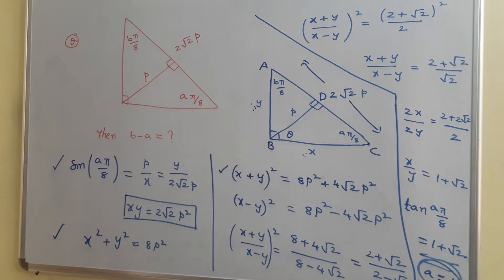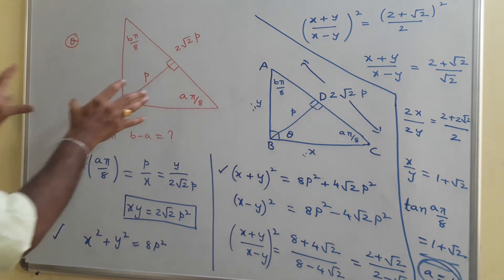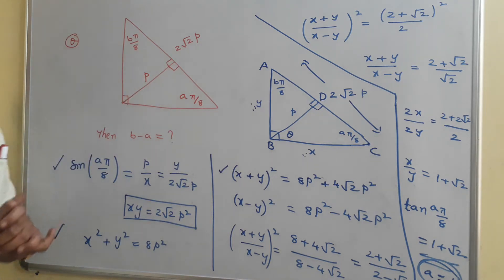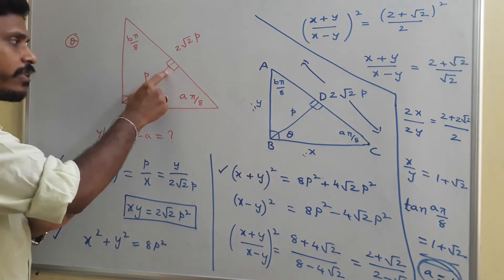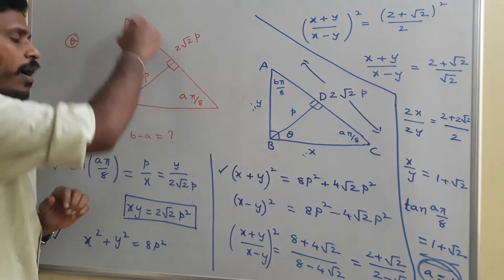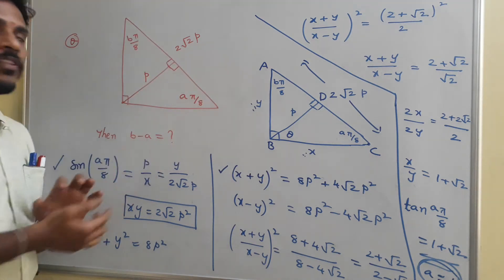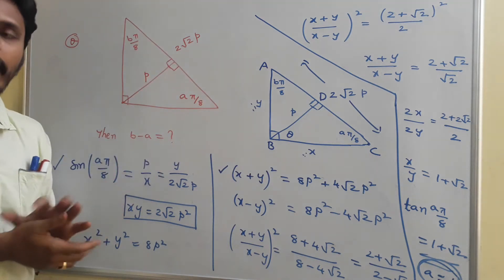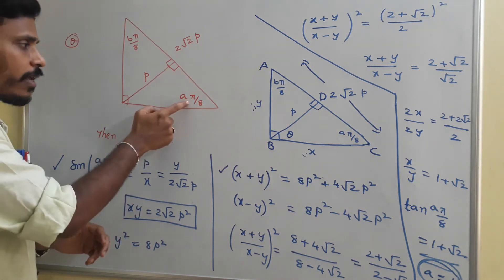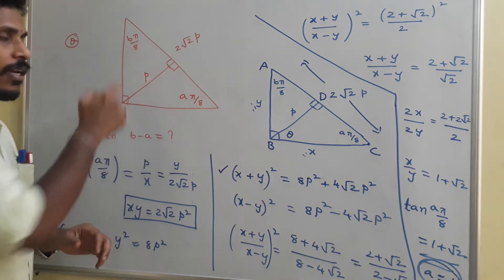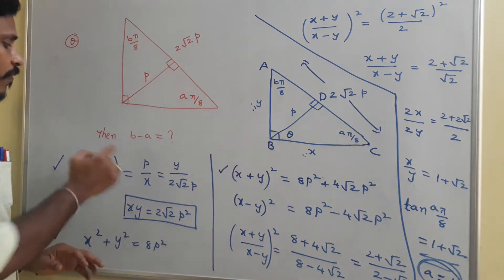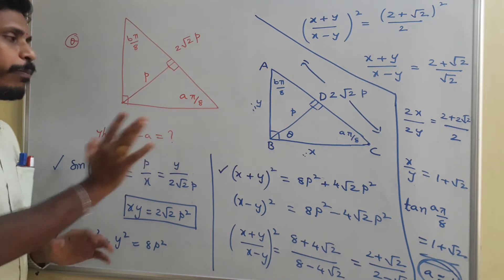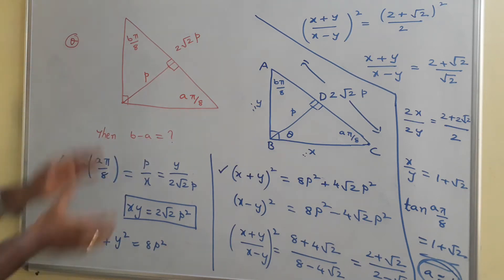Let's look at the problem once again. This green color path is completely in question. We have a right angle triangle. In the right angle triangle, this length is b and the hypotenuse length is 2√2·p as given. One angle is a·π/8 and the other angle is b·π/8, also given. They ask us to find b minus a — that's a separate path.